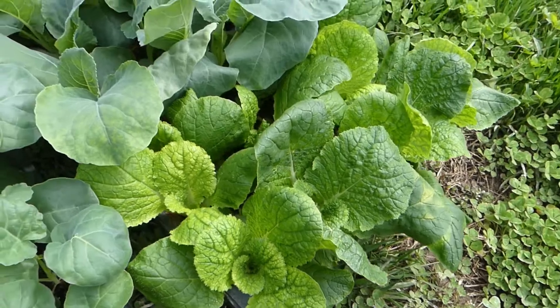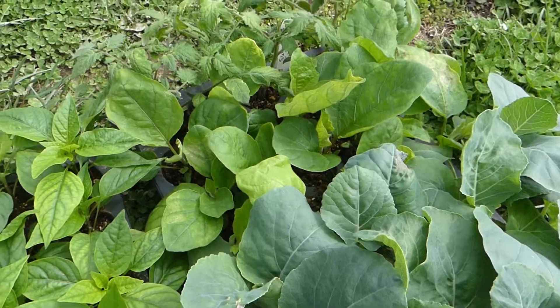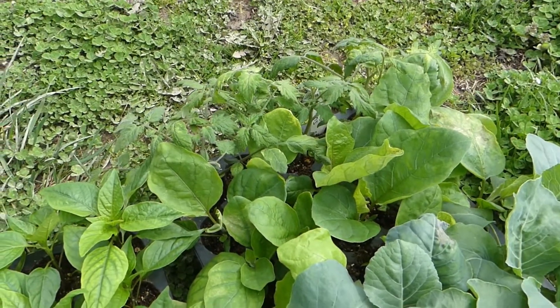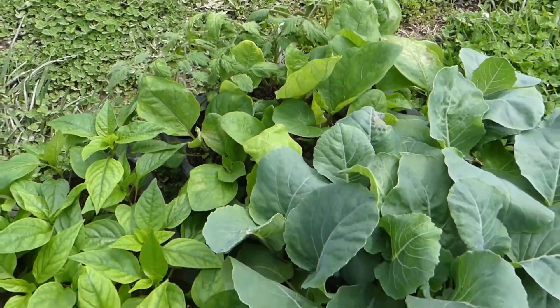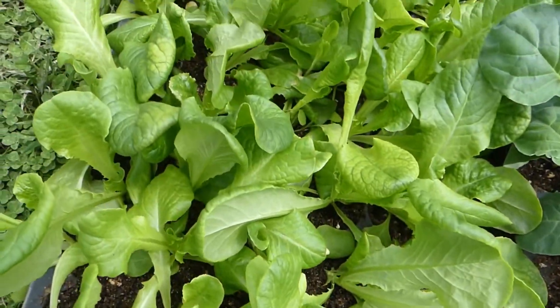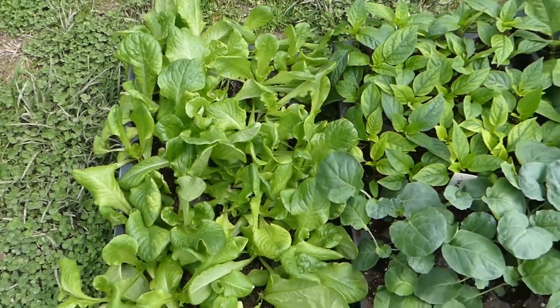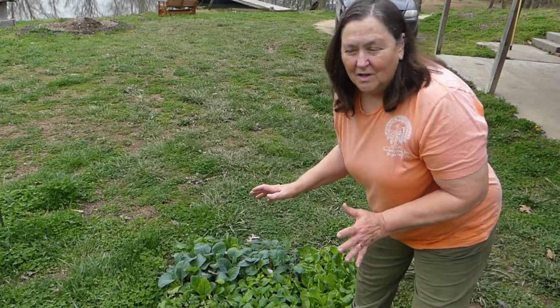These are cabbage there, and that's a cauliflower. Then I've got eggplant and some tomatoes, but they're not going to be ready to plant quite yet. Here I have some broccoli, and over here I have quite a lot of a tray of lettuce that's ready to go as soon as the ground's ready.